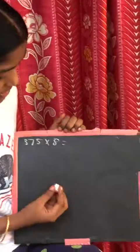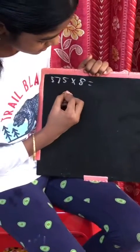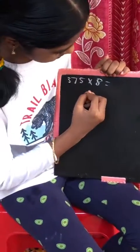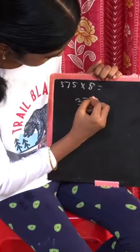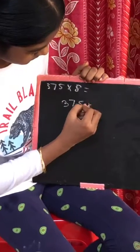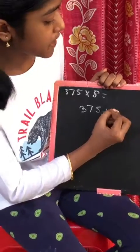First, what you have to do is write the question. Then write the place values.